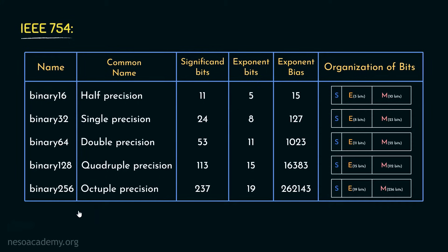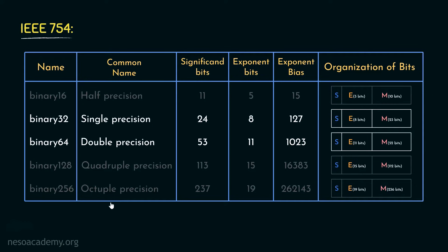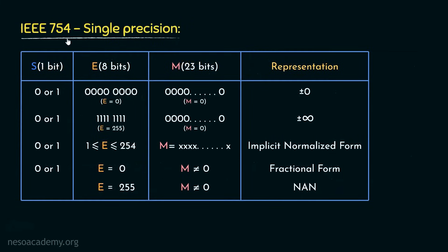Basically, the more bits we dedicate for the floating point representation, the more precise our closer approximation becomes. In today's session, we are going to mainly focus on single precision, that is binary 32, and binary 64, which is double precision, because these two are very widely used. So let's begin with the IEEE 754 single precision, that is binary 32 first.